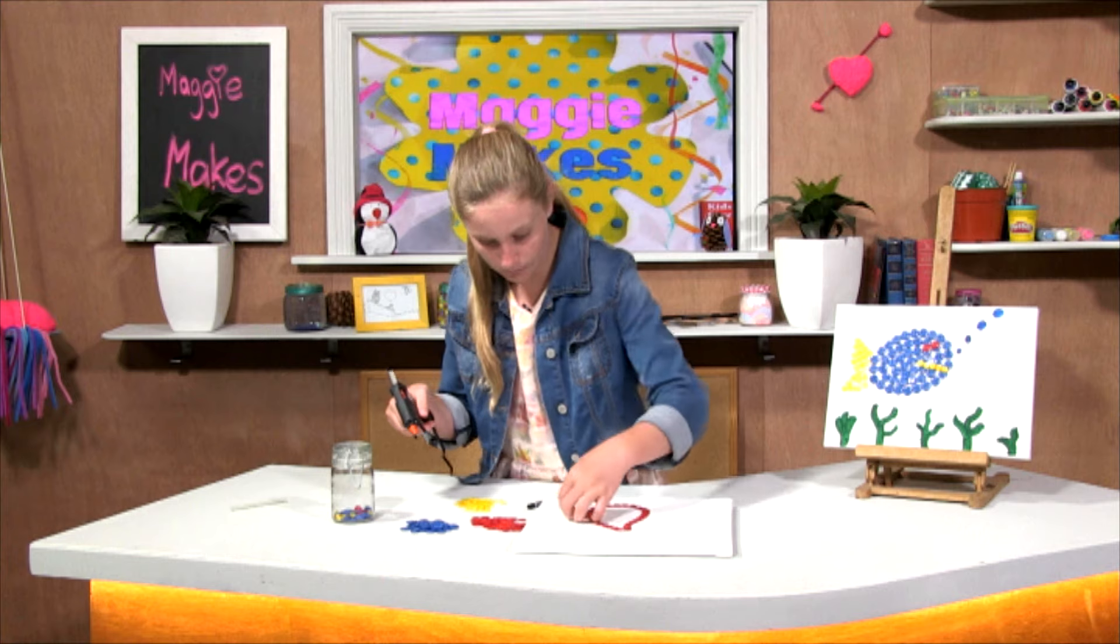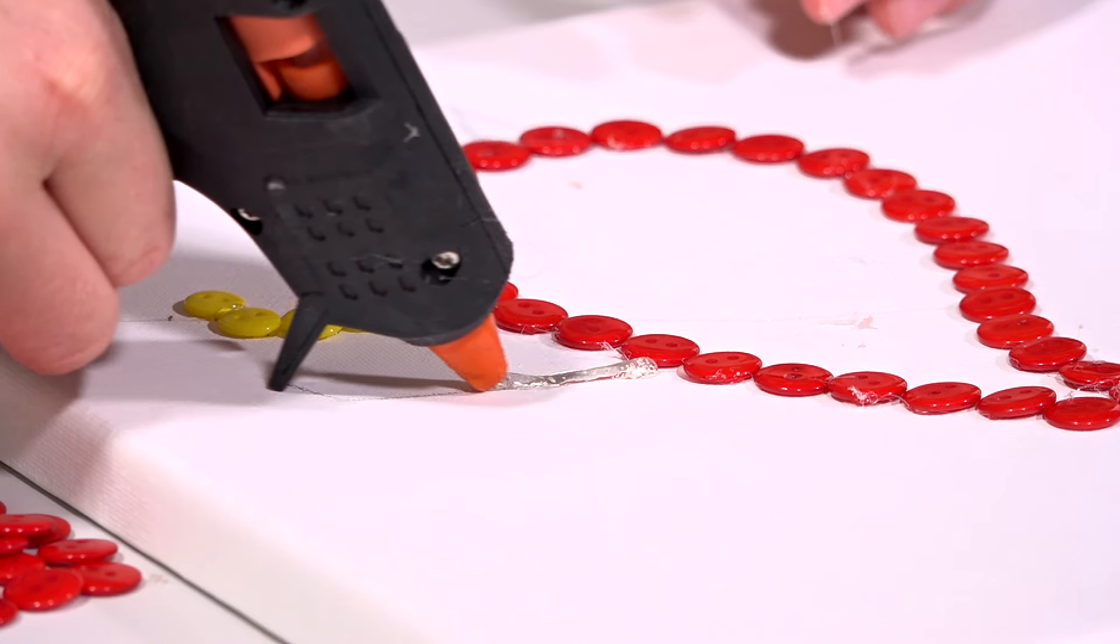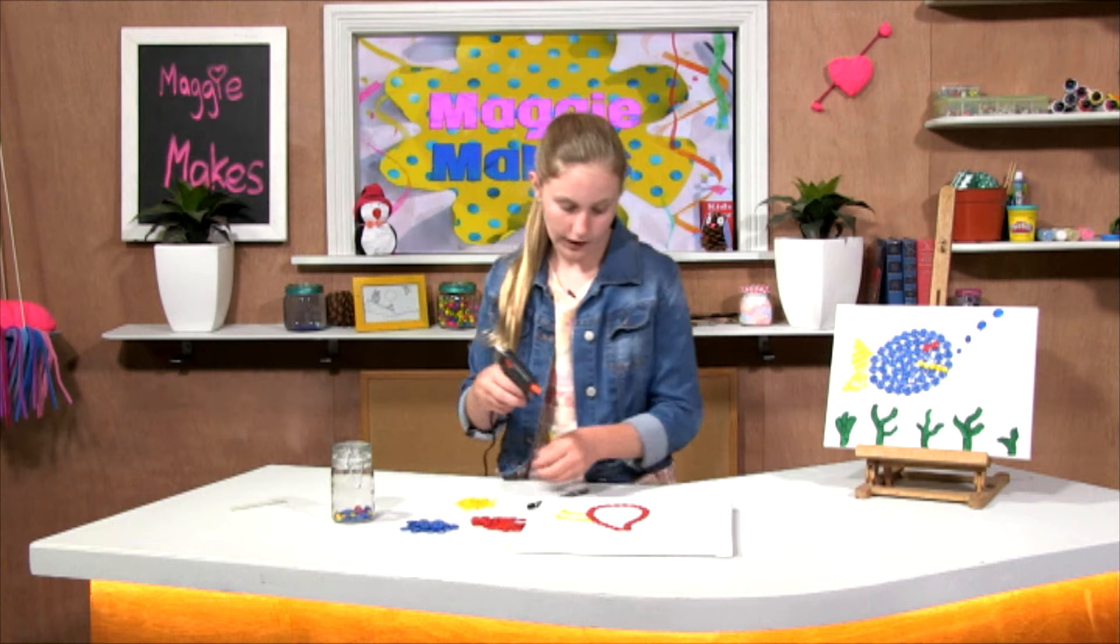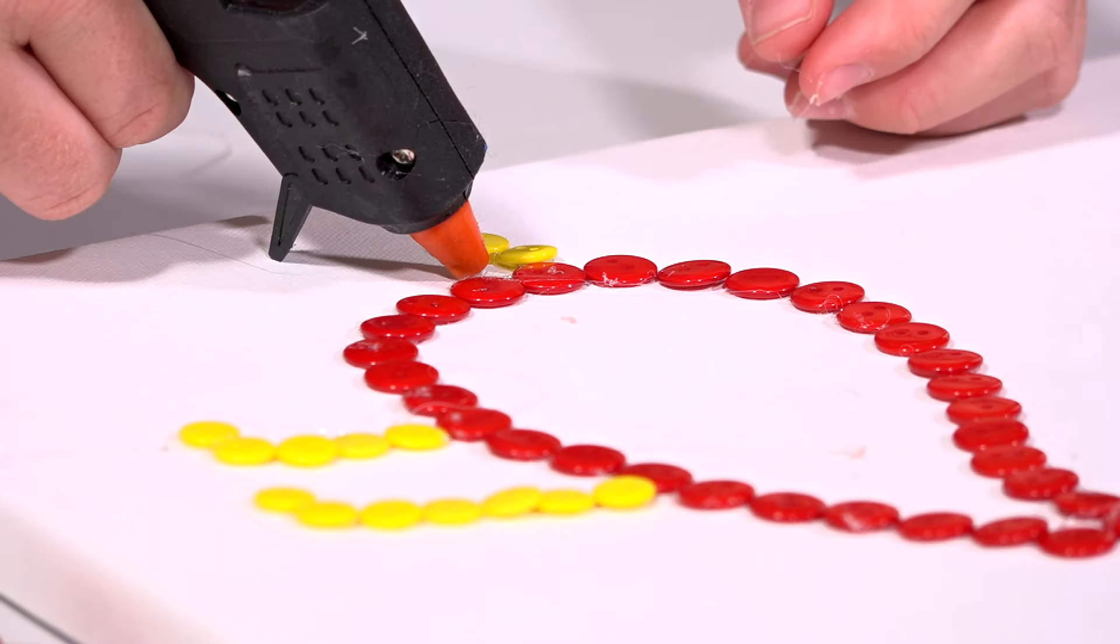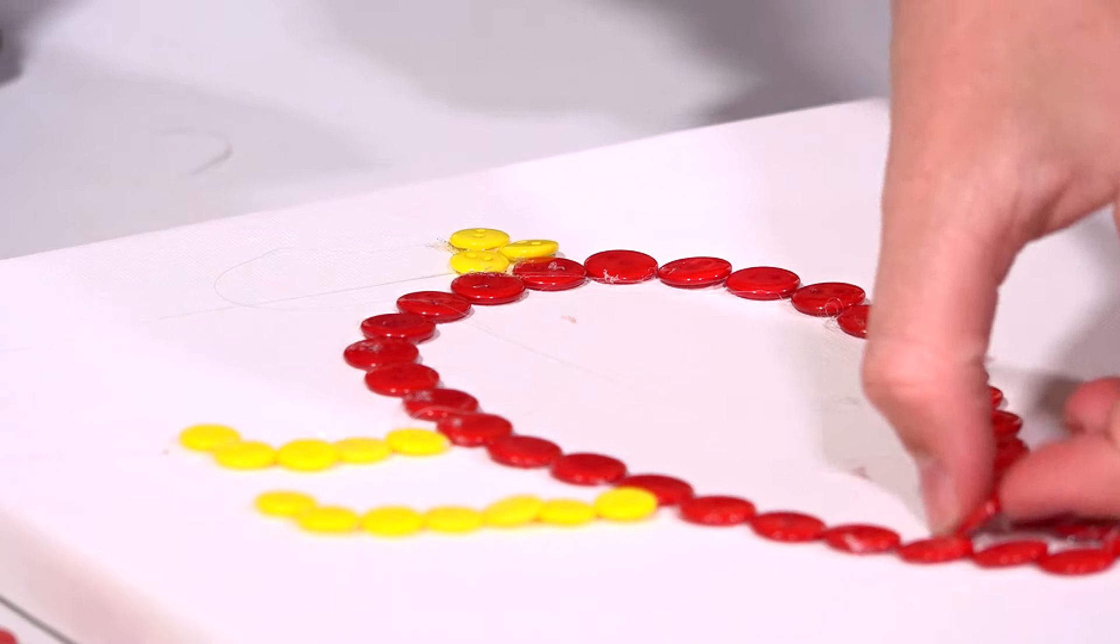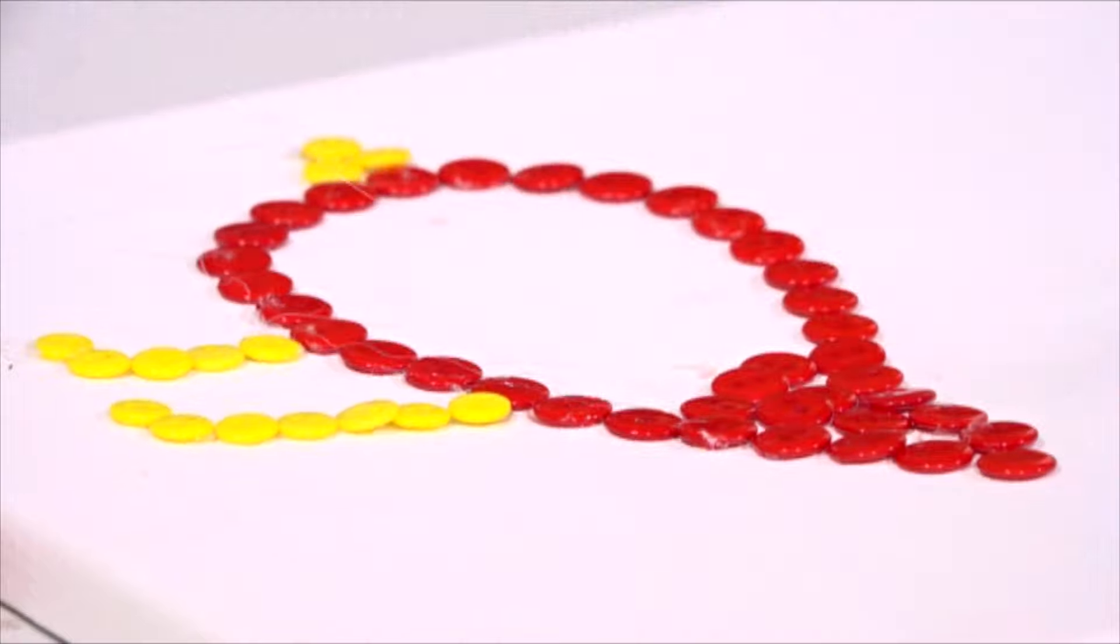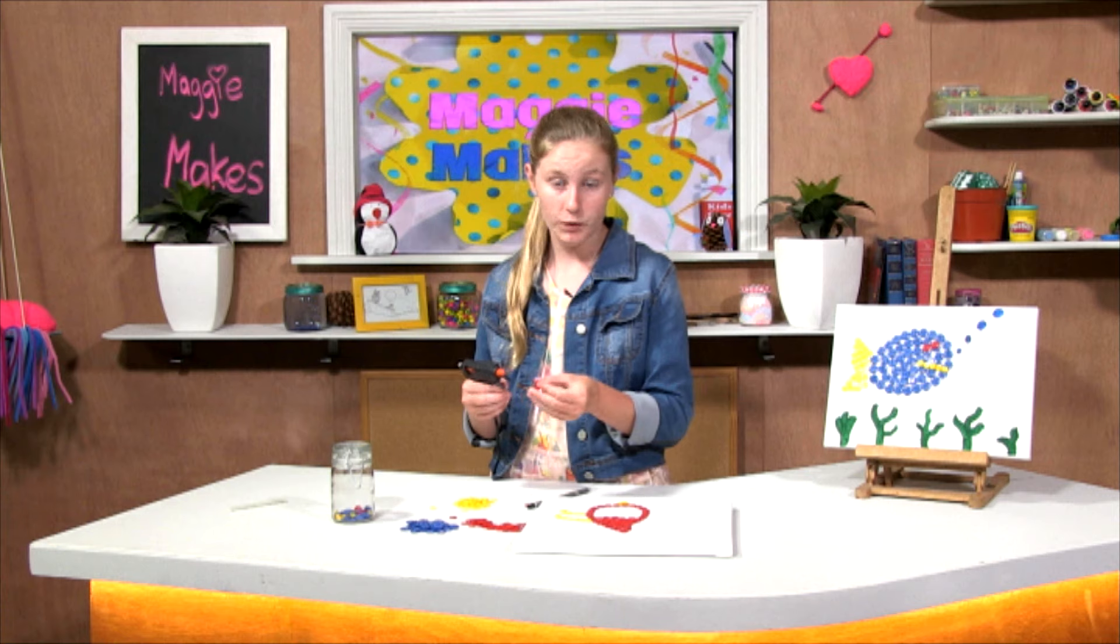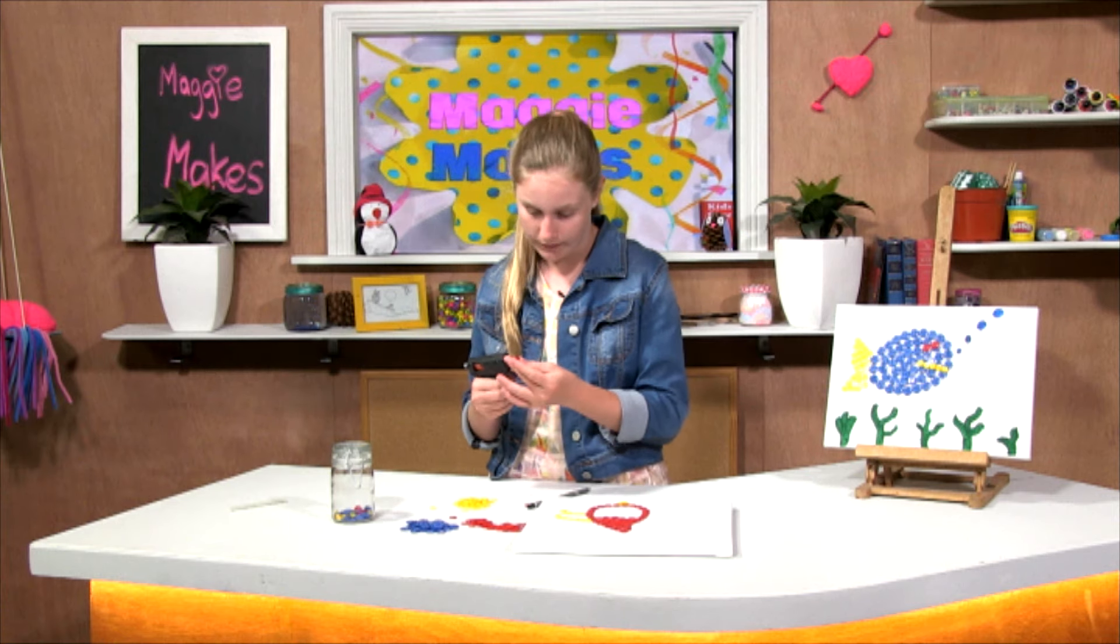And now the little beak. Now we are going to fill in the body, and you can make your creature as big or as small as you like depending on how many buttons you have.